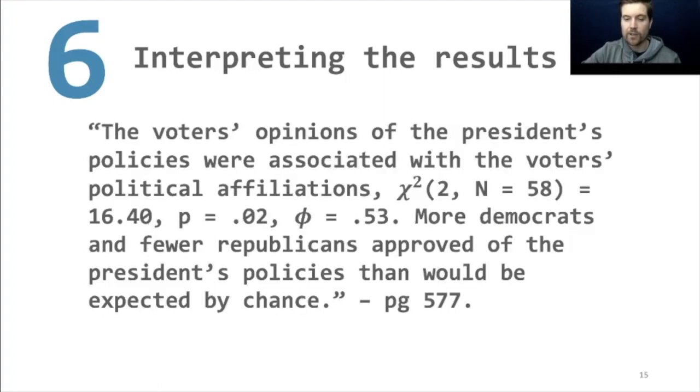Lastly, we want to interpret the results. This is a really good one that you find on page 577. The voters' opinions of the president's policies were associated with the voters' political affiliations. So you have the voters' opinions must be categorical and then the voters' political affiliations must be categorical. And what you have is the chi-square with the degrees of freedom and how many people are in the sample. The chi-square value, the p-value, meaning it's significant, and our phi, which is .5. That means it's a large effect. And then it goes on to interpret what this actually means in practice. It means more Democrats and fewer Republicans approved of the president's policies than would be expected by chance. If you answer this way, that is perfect. That's a great response for a chi-square analysis.